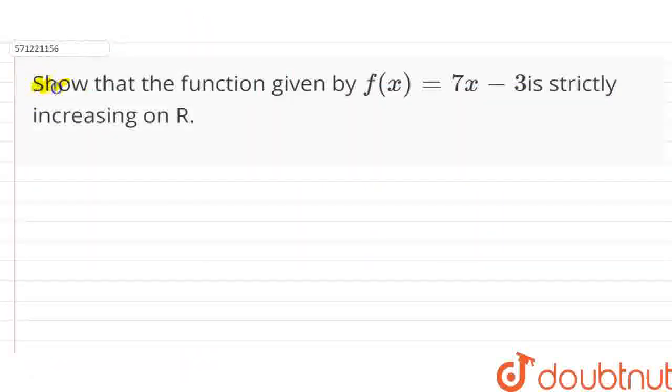The question says, show that the function given by f(x) = 7x - 3 is strictly increasing on R, that is, real numbers.